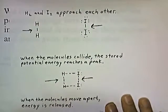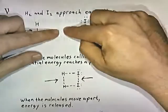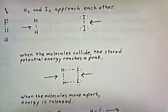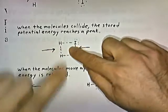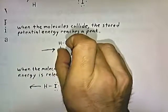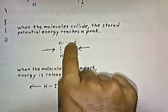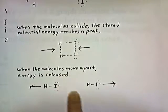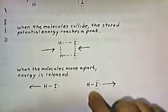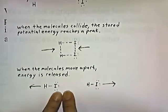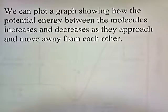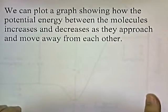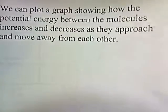Here's a diagram of what's happening. Hydrogen and iodine start moving toward each other and crash into each other. When the molecules collide, the stored potential energy reaches a peak — as though a spring were being compressed between them. Bonds are starting to form here, and bonds are starting to break here. When the molecules move apart, energy is released, just as when you let go of a spring, it expands and energy is released.